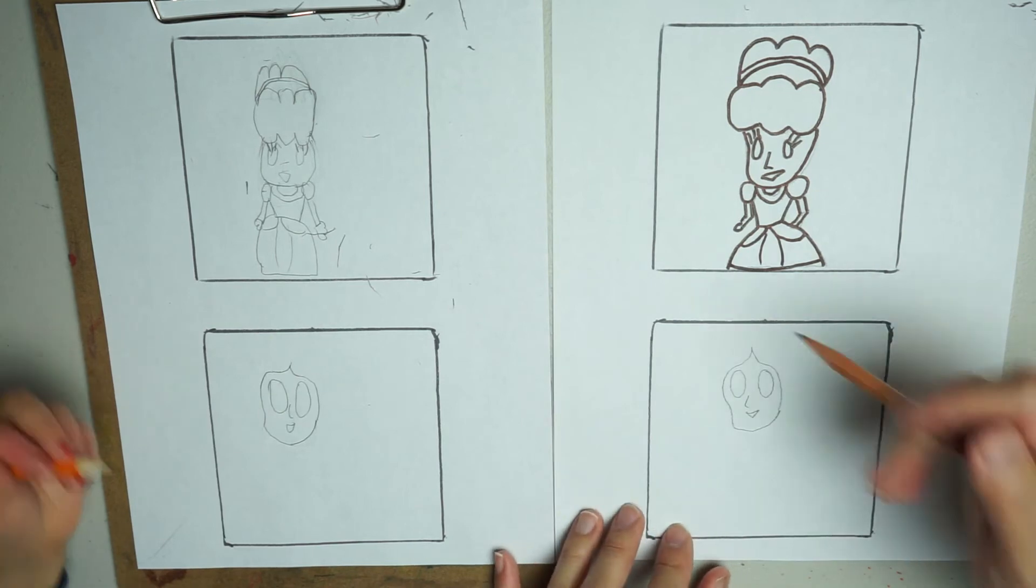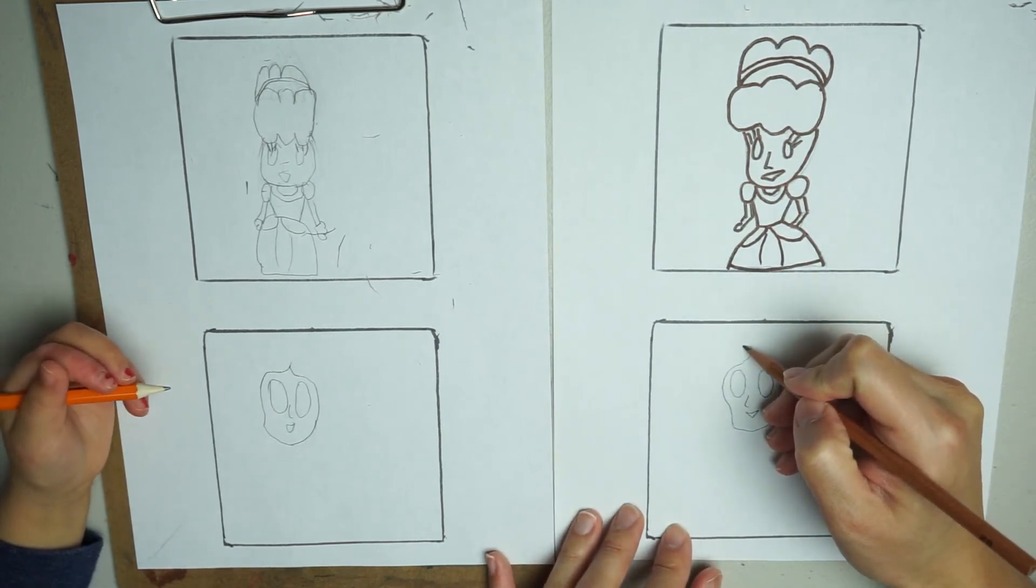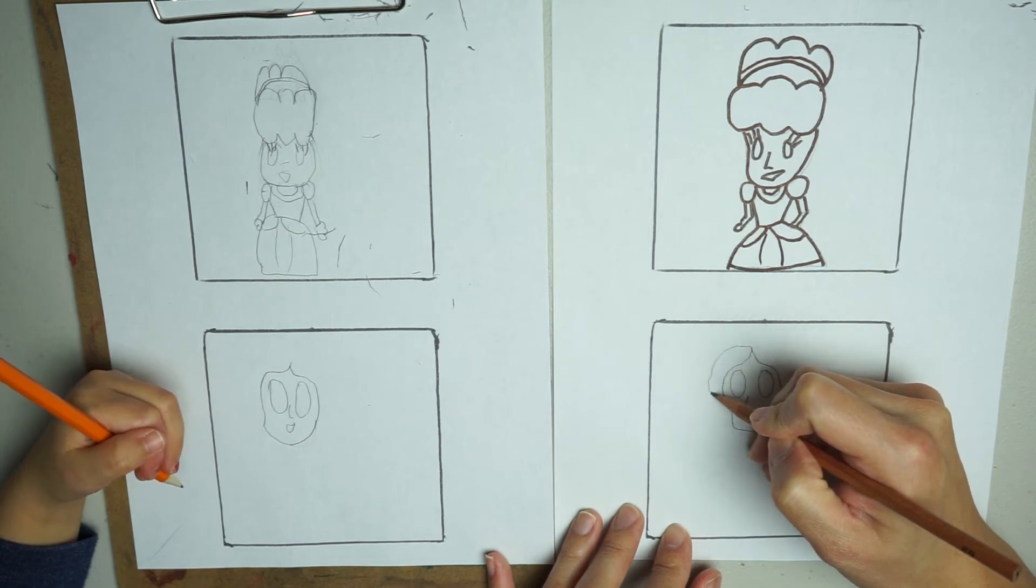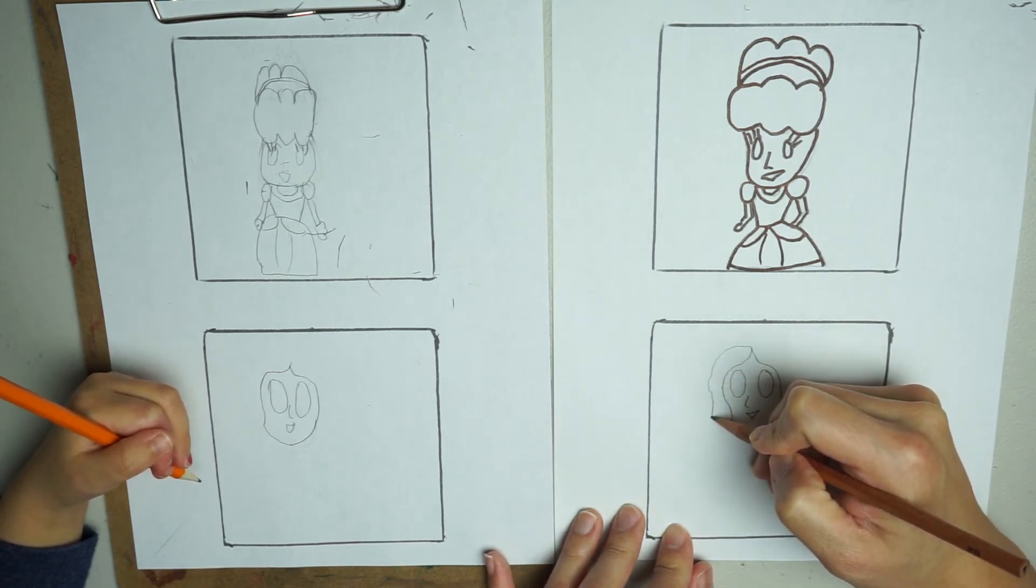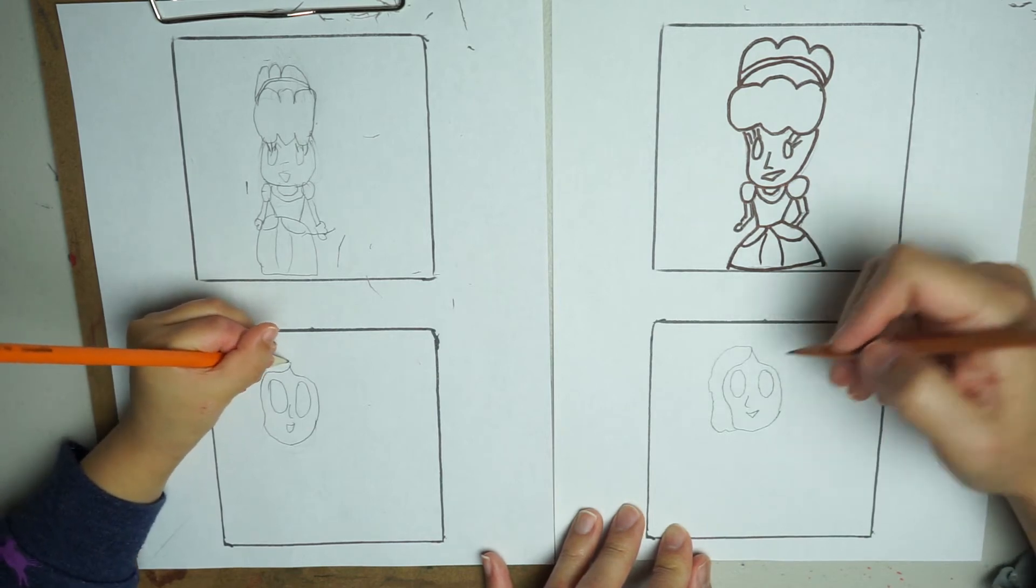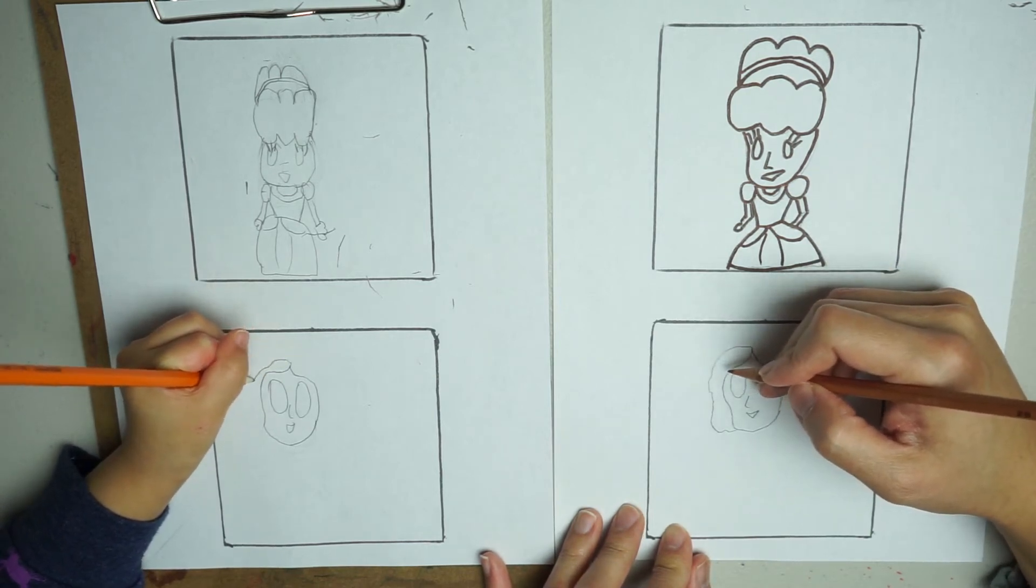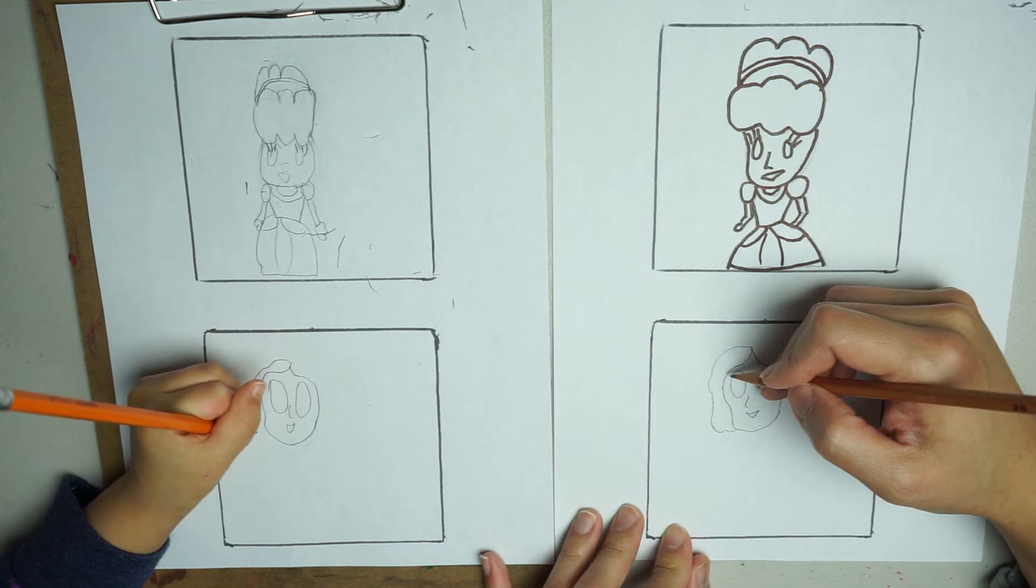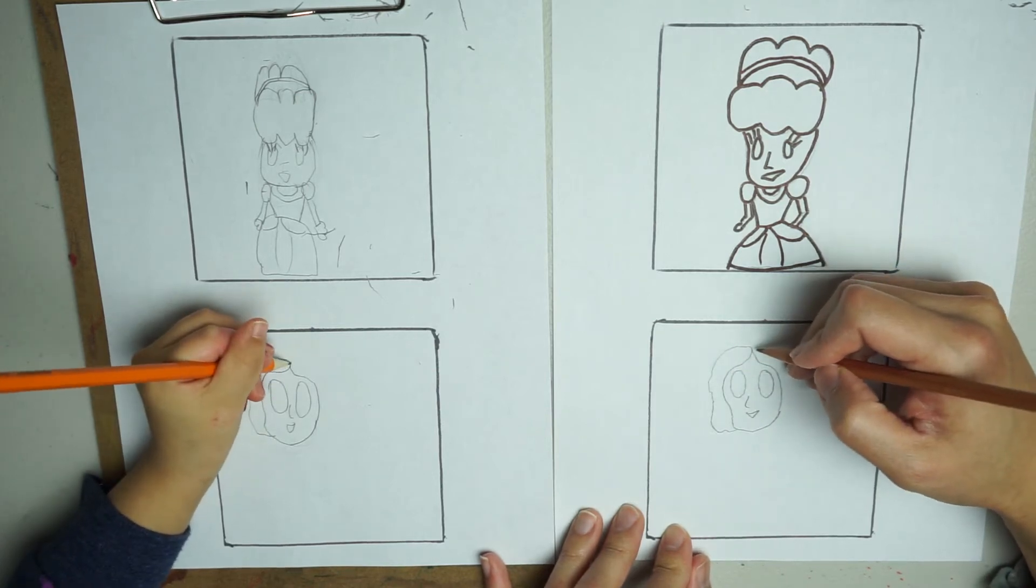And we're going to draw her hair, okay? So her hair is shorter than Cinderella. Okay. So it's wavy here. Very good.